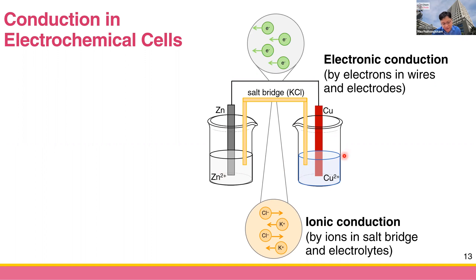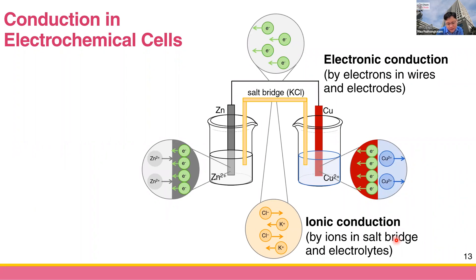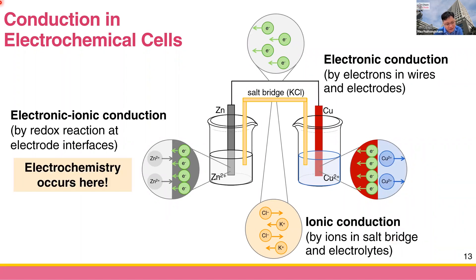This ionic conduction occurs in the beaker, in each half cell, and also in the salt bridge. For example, if your salt bridge contains saturated potassium chloride, when the cell operates, Cl⁻ and K⁺ ions flow to preserve electrical charge balance. The third type — and the most important in this area — is called electro-ionic conduction, which involves both electrons and ions, and occurs due to the redox reaction at the electrode interface.